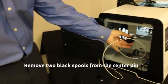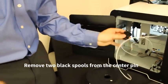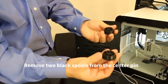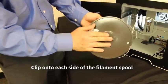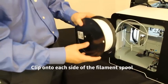As a next step, you have to take these two adapter spool rolls and place it to the right and to the left of your filament spool.